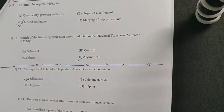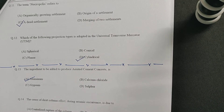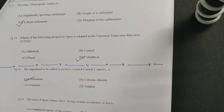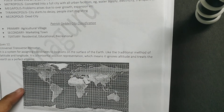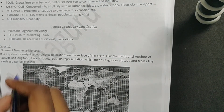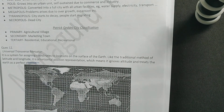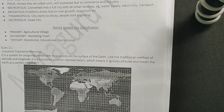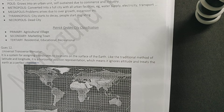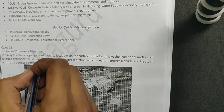Question number 12: which projection type is adopted in Universal Transverse Mercator, or UTM? The answer is cylindrical. UTM is a system for assigning coordinates to locations on the surface of the earth, like the traditional method of latitude and longitude. It is a horizontal positional representation which ignores altitude and treats the earth as a perfect cylinder.